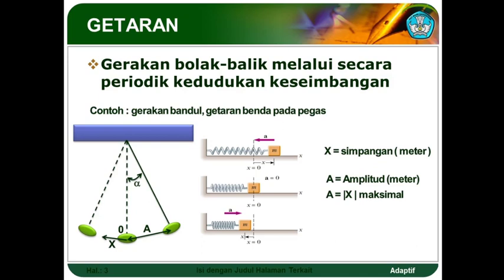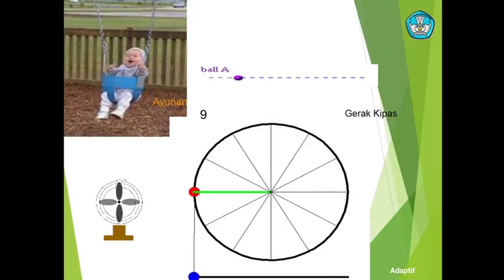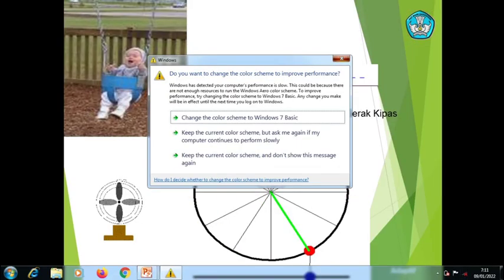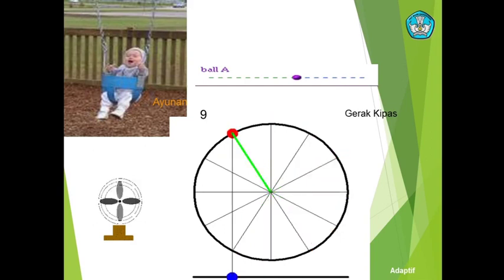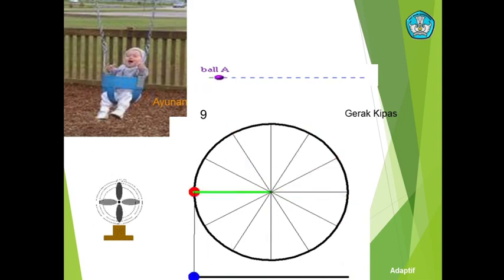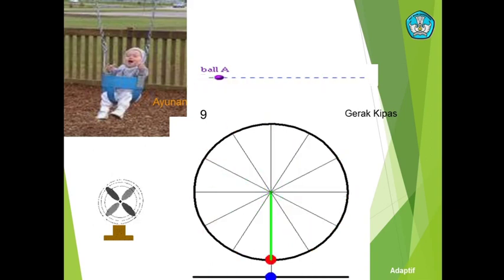Ini contoh dari getaran: gerak bandulan, getaran benda pada pegas. Ini pada posisi A bergerak melewati O — O itu adalah titik kesetimbangan. Jika kita gambarkan, maka X adalah simpangan. A atau simpangan terjauh adalah amplitudo. Ini bisa kita contoh gerak pada kipas, itu juga sebuah getaran karena dia juga melalui sebuah titik kesetimbangan. Atau ayunan juga merupakan sebuah getaran.